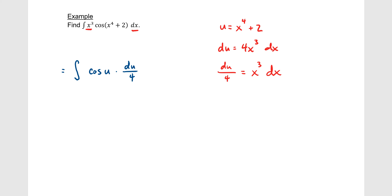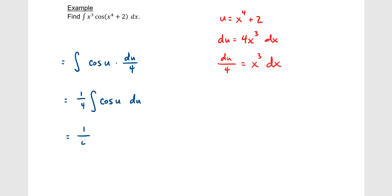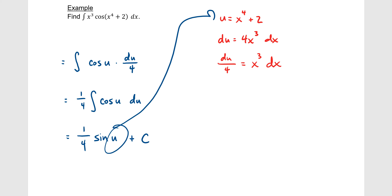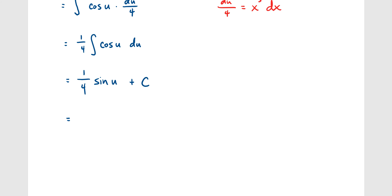We pull the 1/4 out front as a constant: 1/4 times the integral of cosine(u) du. The integral of cosine is sine, giving 1/4 times sine(u) plus c. Replacing u with x⁴ + 2, we get 1/4 times sine(x⁴ + 2) plus c, and we are done. We could take the derivative of this to verify it equals what we started with.